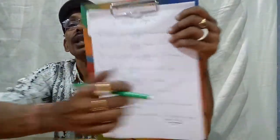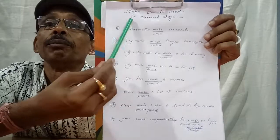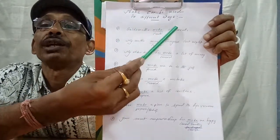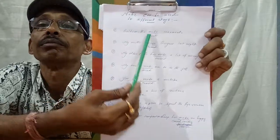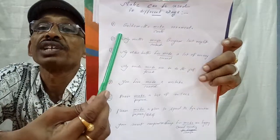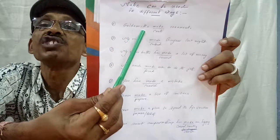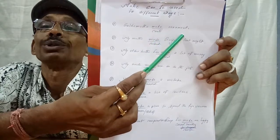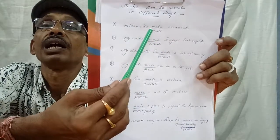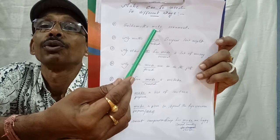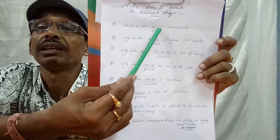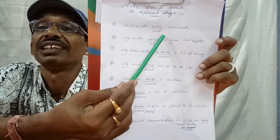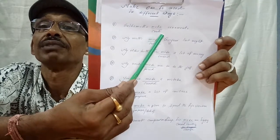How to use make in different ways — let me show you one by one. Make can be used in different ways. First example: 'Goldsmiths make ornaments.' Here I have used the verb 'make' to mean 'create.'